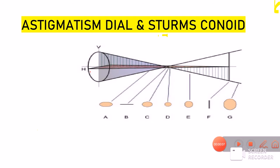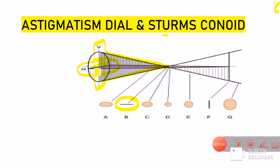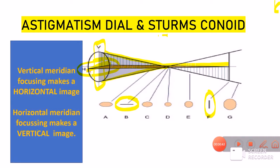To understand the first concept, remember the video on Sturm's conoid. From that diagram, the vertical meridian was more curved compared to the horizontal meridian, so the vertical meridian was focusing much sooner. When the vertical rays were focusing, we were getting a horizontal line image. However, when the horizontal meridian was focusing, the image we were getting was a vertical line. So the first concept is: the vertical meridian focusing makes a horizontal image, and the horizontal meridian focusing gives a vertical image.